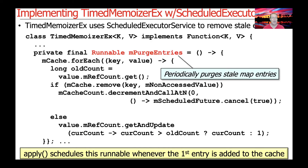The apply method schedules this runnable whenever the first entry is added to the cache. You might wonder why not just register it once — but after entries get purged, there may be no key-value pairs remaining. So the next time someone registers one, that becomes the first time again. That's what we need the ThresholdCrosser for: to track when we go from zero to one, or from one to zero.